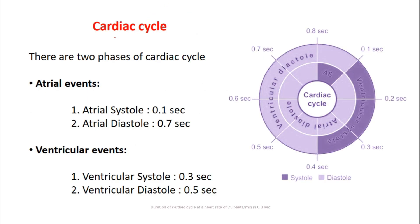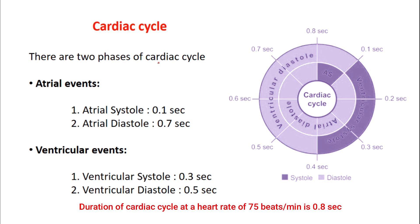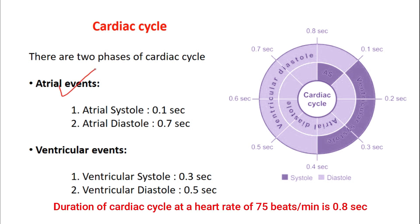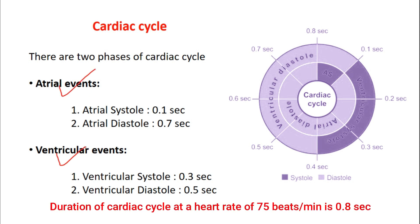There are two phases of the cardiac cycle: atrial events and ventricular events. One is related to the atria and another one is related to the ventricle.